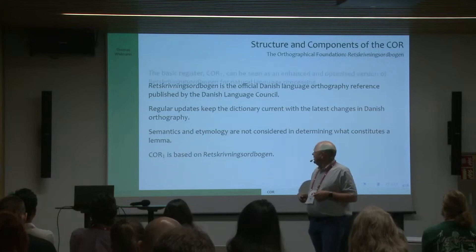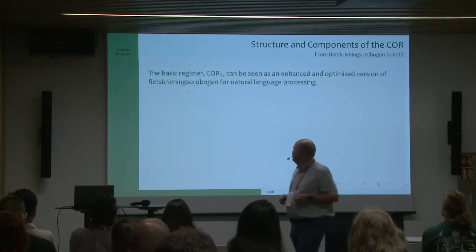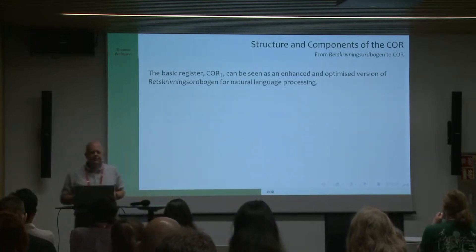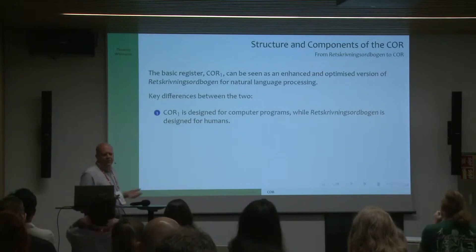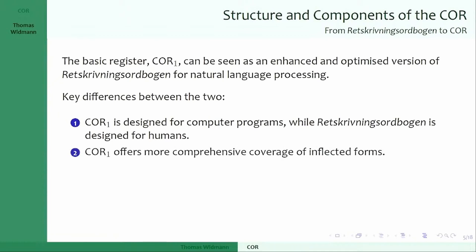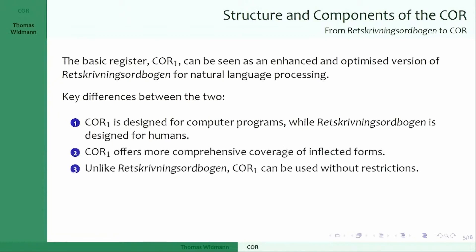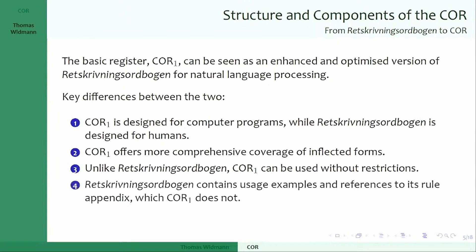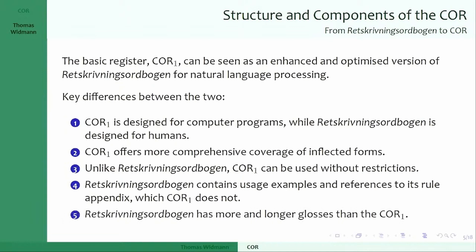COR1 can basically be seen as an enhanced and optimized version of the dictionary for natural language processing. There are some key differences: COR1 is designed for computer programs while the dictionary is designed for humans — even the underlying XML is very much focused on presentation. COR1 has many more inflected forms, can be used without any restrictions for any purpose whatsoever including publishing a dictionary, and it only has clauses to disambiguate words not disambiguated by inflection patterns.